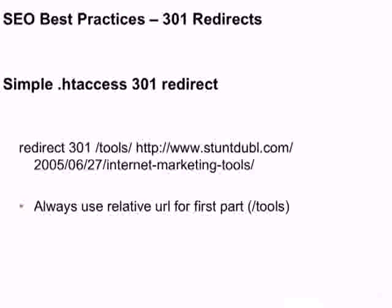Let's look at a simple example of setting up a .htaccess 301 redirect. The .htaccess is just a file within the Apache web server. 301 redirects and how you set them up are platform-specific — depending on the type of web host your website is using, you'll have to set it up a little differently. You're always going to want to use the relative URL for the first part — the redirect. It's just two simple lines of code: Redirect 301, the redirected URL first, and the destination URL second, which goes in that .htaccess file in Apache.